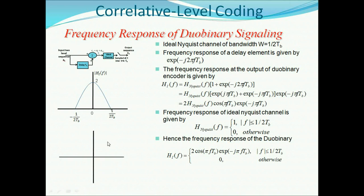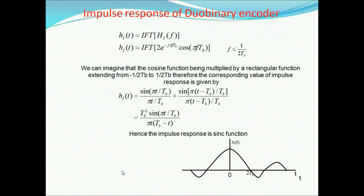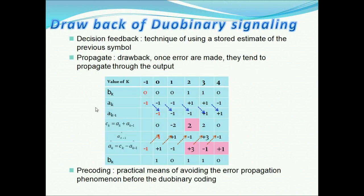Similarly, the argument of Hi(f) ranges from −π/2 to +π/2 for f from −1/(2Tb) to 1/(2Tb), with value 0 at f=0. Taking the inverse Fourier transform gives the impulse response of the duobinary encoder.